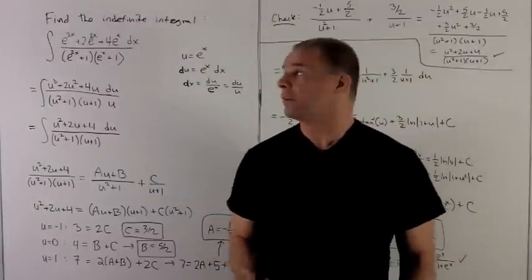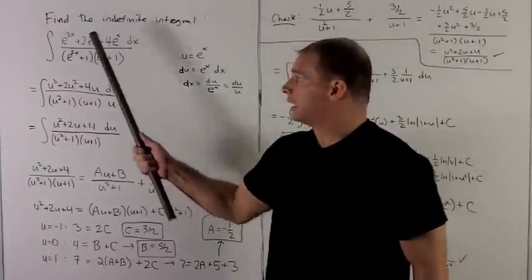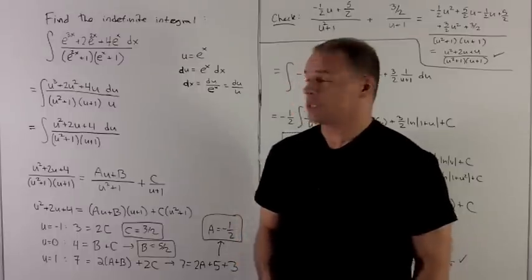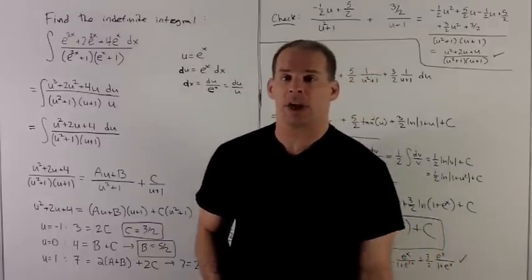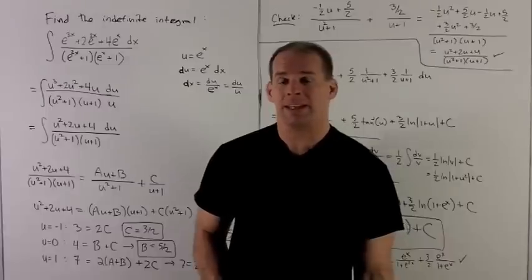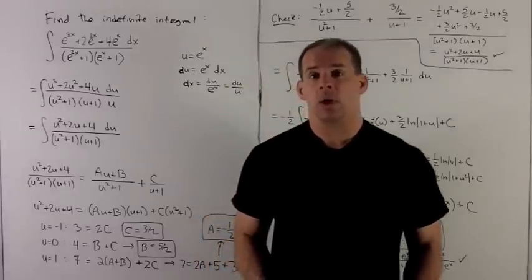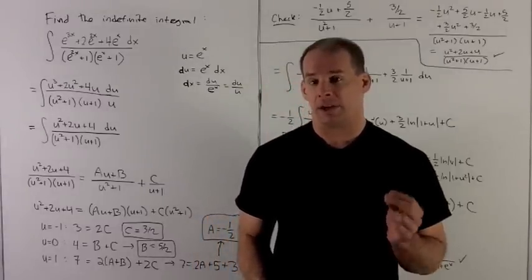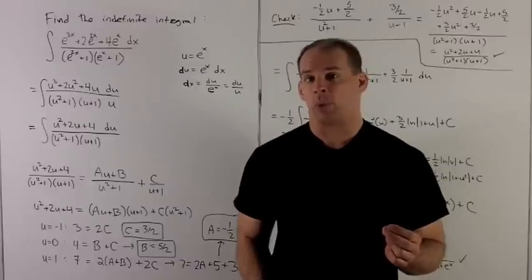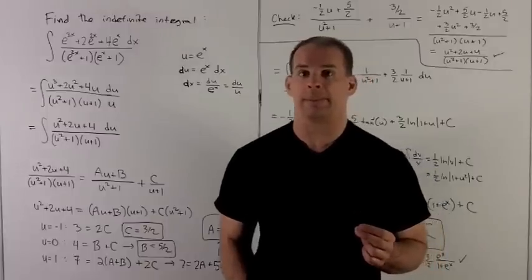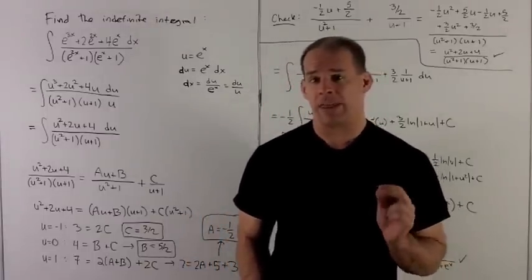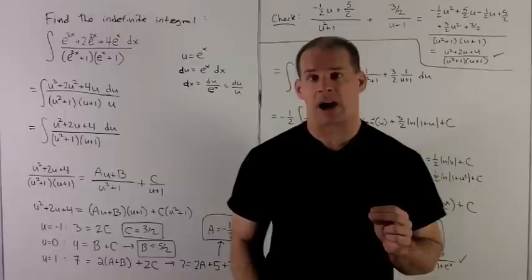Find the indefinite integral of e to the 3x plus 2e to the 2x plus 4e to the x, over e to the 2x plus 1 times e to the x plus 1, dx. We've gone through all the cases of integration by partial fractions, so now we just want to do an example where things are spiced up a little bit. Here we'll do a substitution and then we'll do integration by partial fractions.